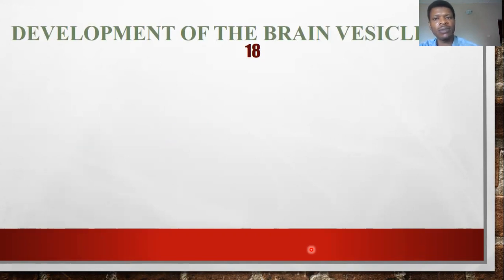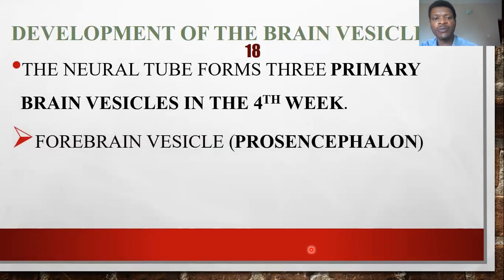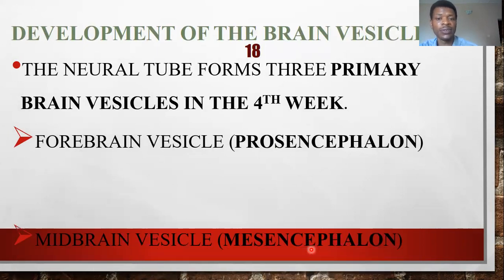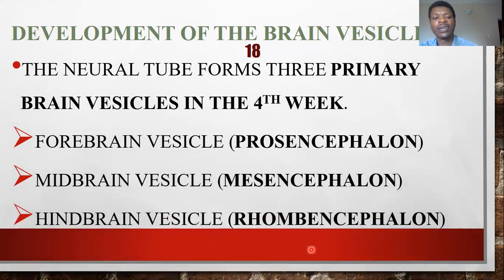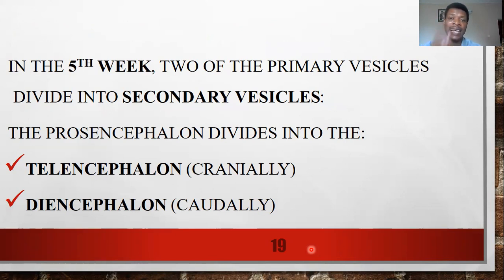Now the development of the brain vesicles. At the fourth week of intrauterine life, we have three brain vesicles: the forebrain vesicle, also known as the prosencephalon; the midbrain vesicle, also known as the mesencephalon; and the hindbrain vesicle, also known as the rhombencephalon. At the fifth week, secondary brain vesicles are formed by division — but not all three divide; just the first and the last divide. The mesencephalon does not divide.